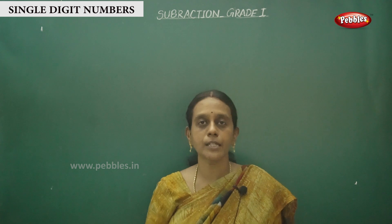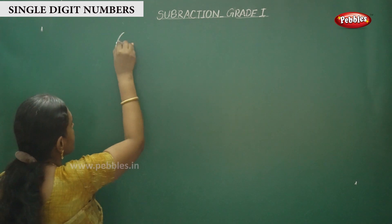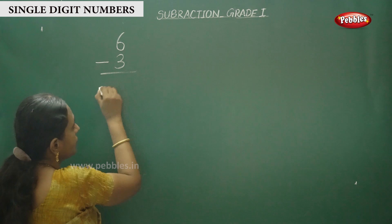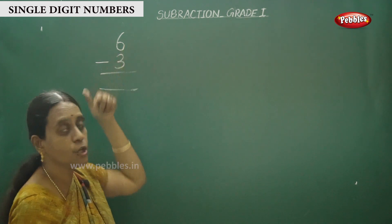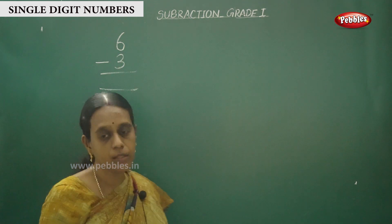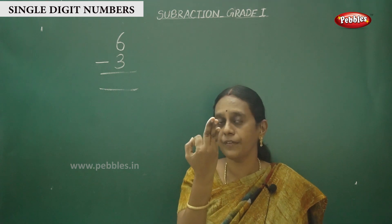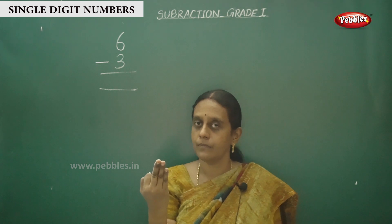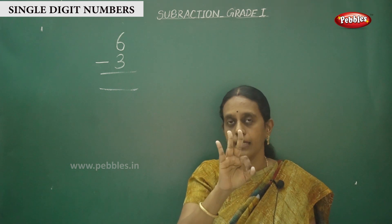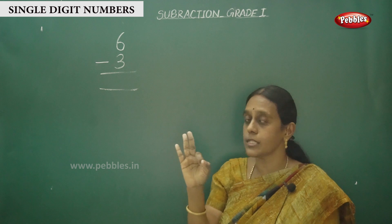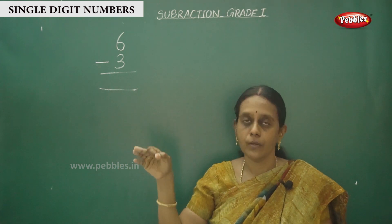Okay children, let me show you another method of subtraction. The number is 6 minus 3. You have to subtract — keep the first number in your mind. Keep 6 in the mind. The next number is 3. In addition we say the after number, but in subtraction you have to say the before number.